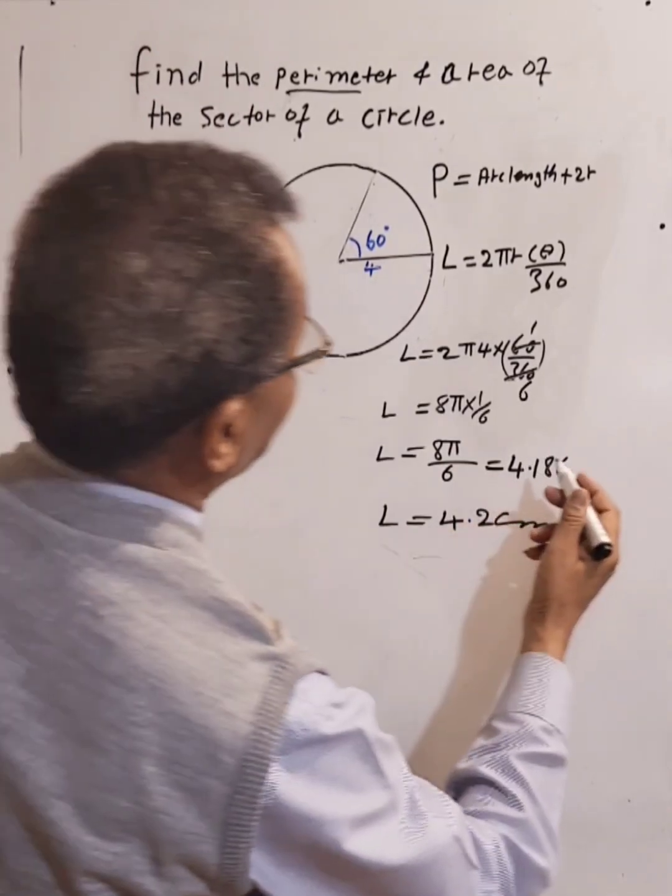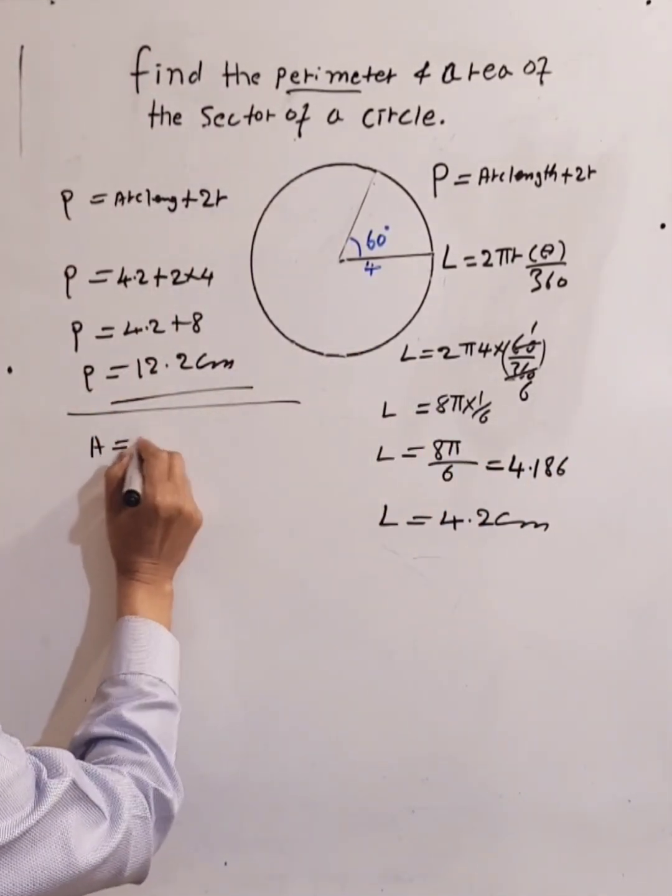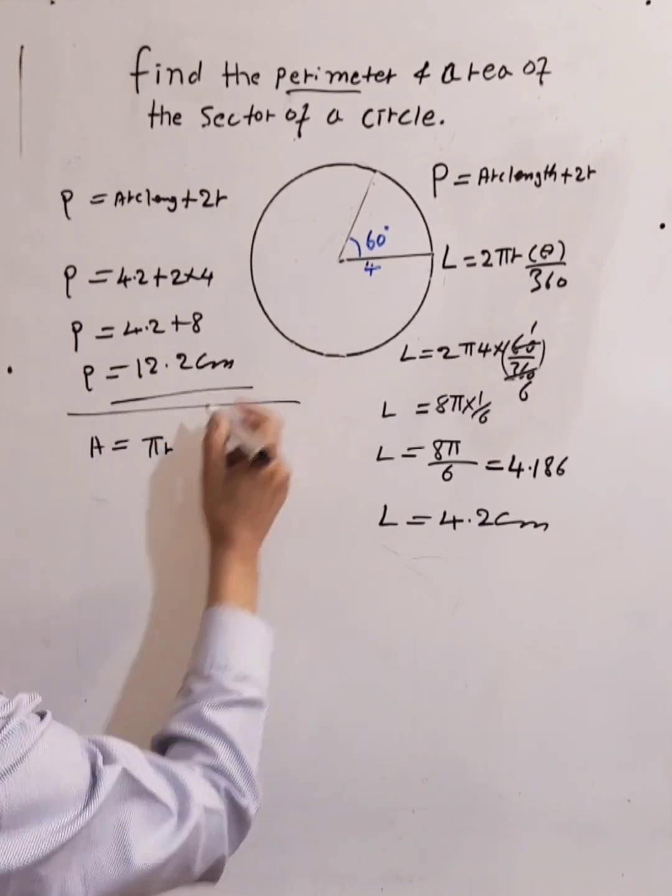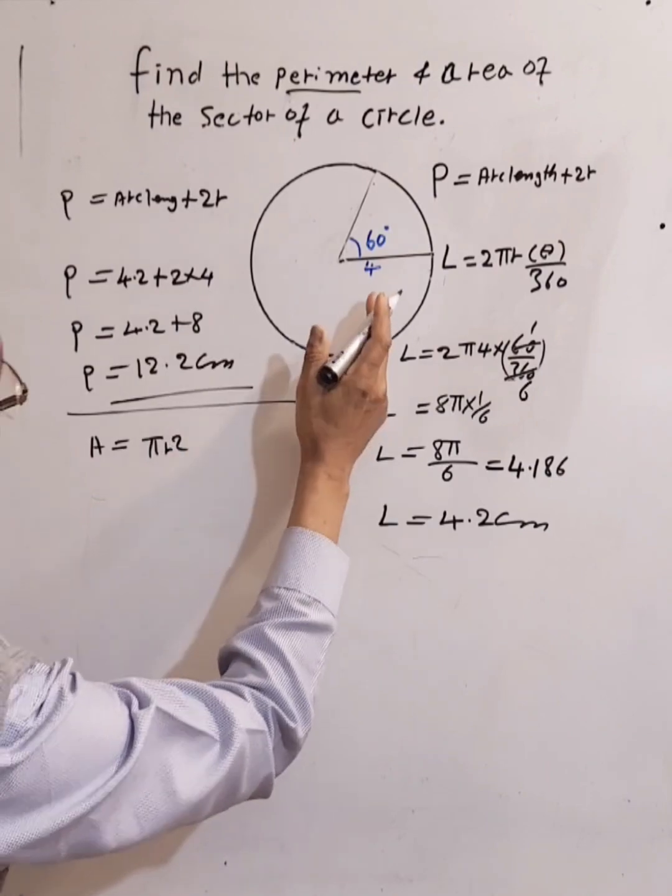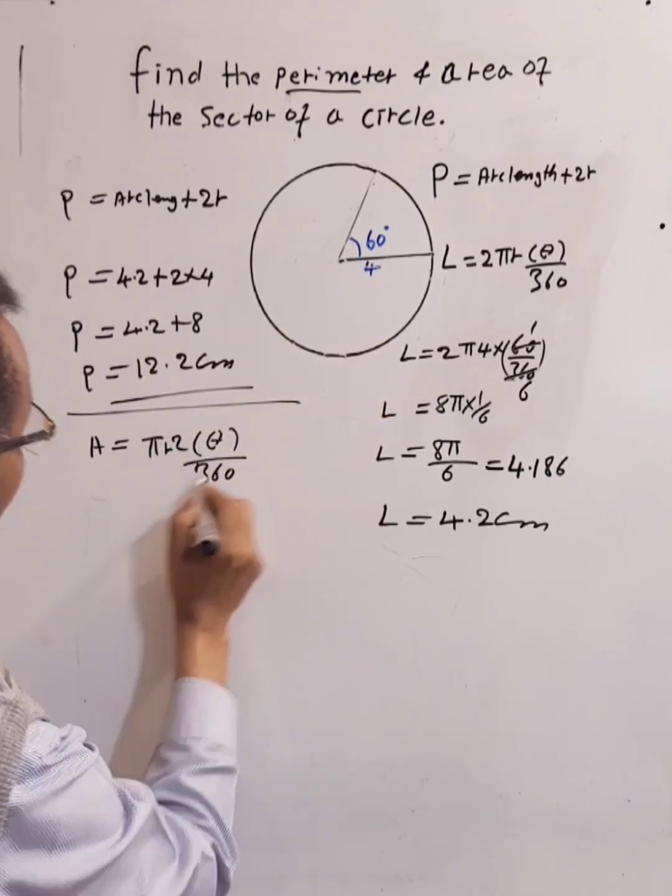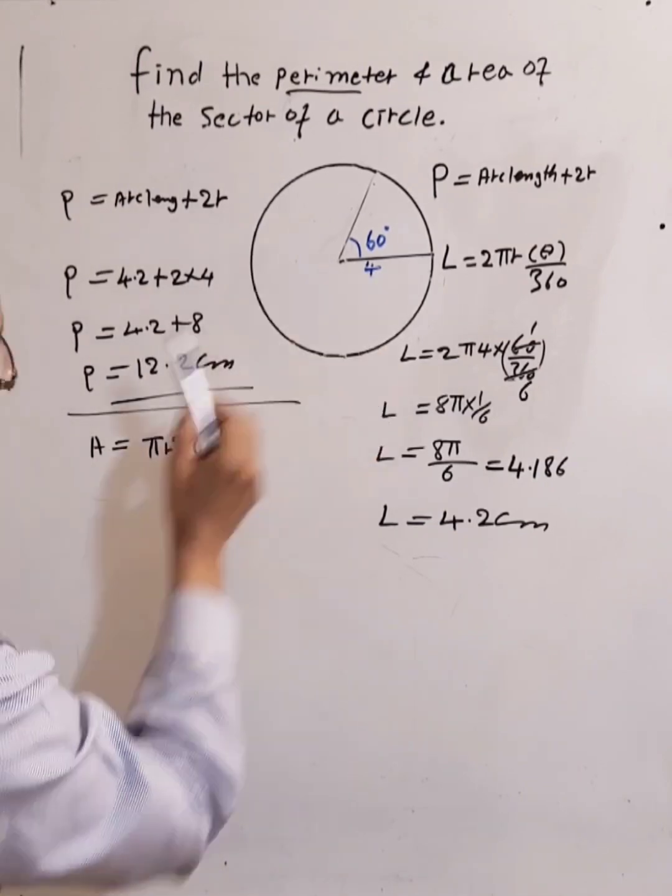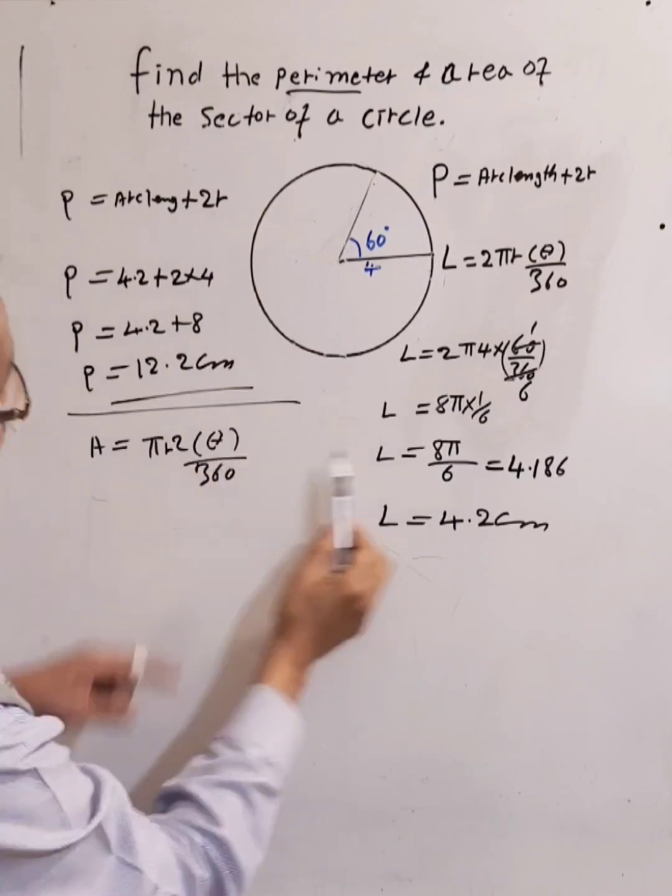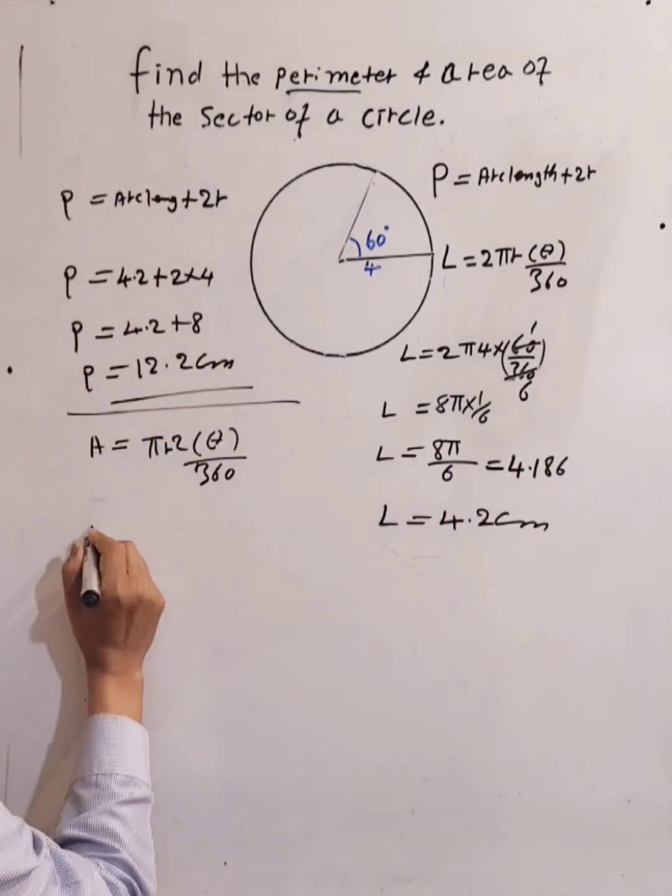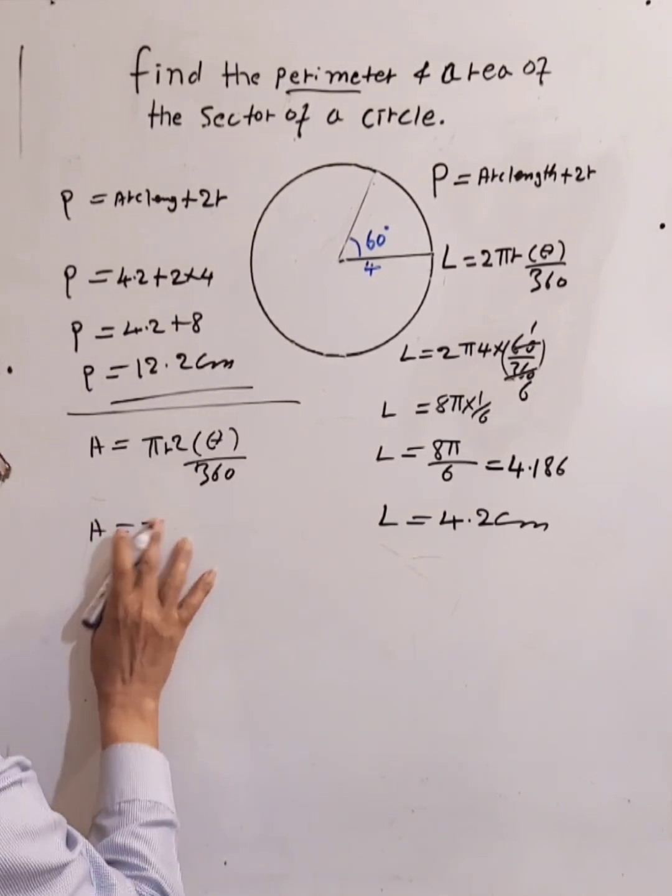Next question is to find the area. To calculate the area, we use the formula A equals πr² times θ over 360. We know π already, we know the radius r, and we know from the previous calculation this is 1 over 6.